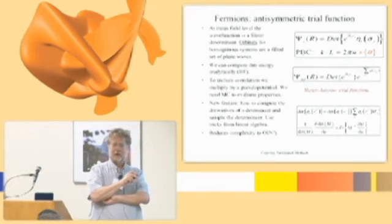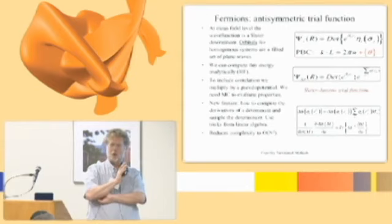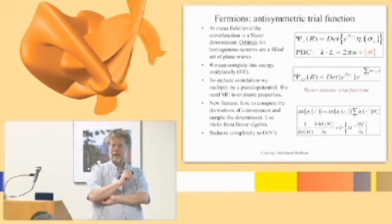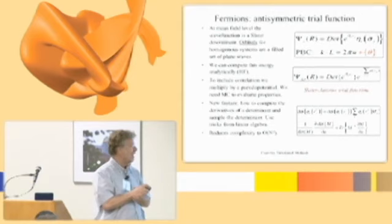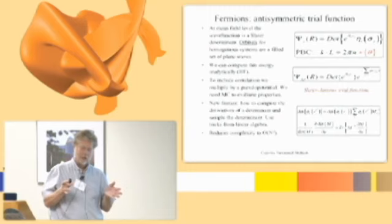Under periodic boundary conditions, the states of an electron are plane waves, e to the i k dot r. The Pauli exclusion principle means if you have N electrons, you fill up the lowest plane wave states once and only once — that's a Fermi liquid. You have occupation of the lowest energy states. Because electrons have up and down spin, if we have 100 electrons, we assign 50 to spin up and 50 to spin down.